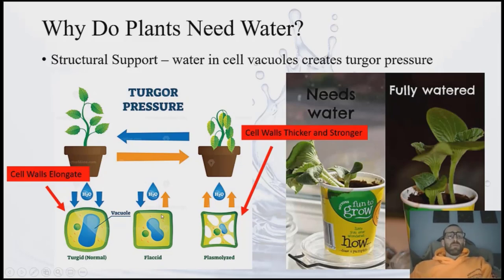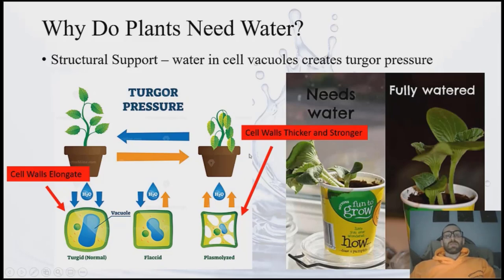When there's not enough water, those vacuoles lose water and the cell membrane begins to pull away from the cell wall, and that results in the wilting that we see in our plants. You can see over here a fully watered plant and then one that needs water that is starting to wilt — this is caused by this lack of turgor pressure.